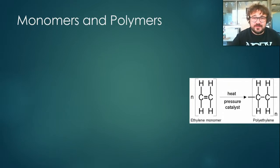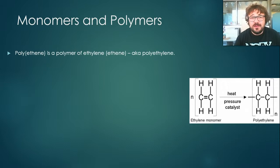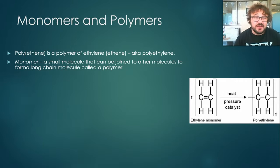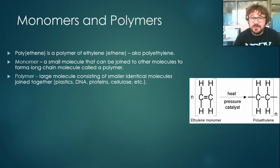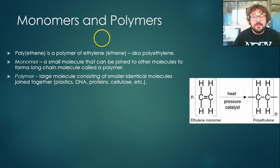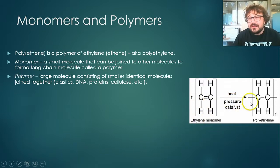So let's look at monomers and polymers very quickly. Polyethylene is a polymer of ethylene. A monomer is basically a single unit — it is the individual unit of a chemical, a small molecule, and it can be joined together to make a long chain. These long chains are called polymers. So a polymer is a large molecule consisting of smaller identical molecules that repeat — ethylene, ethylene, ethylene. We've got ethylene as the monomer, and we join it up so that it becomes polyethylene.